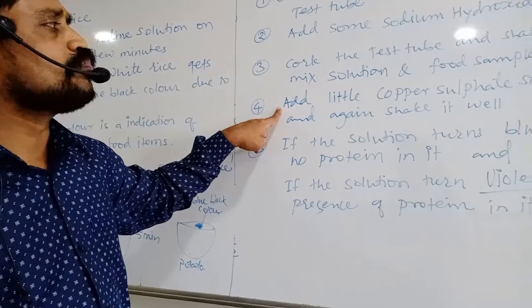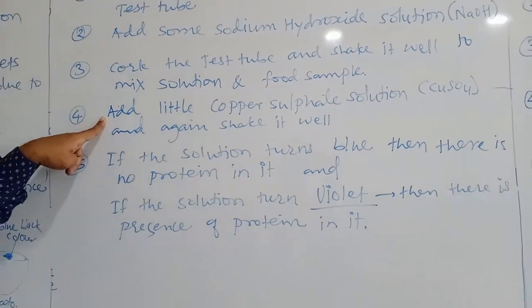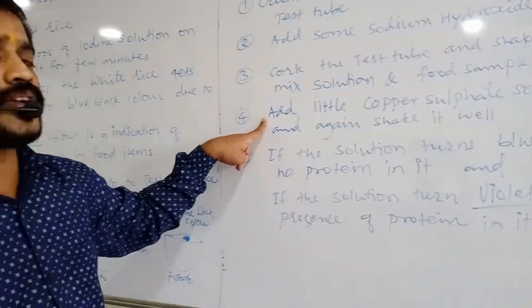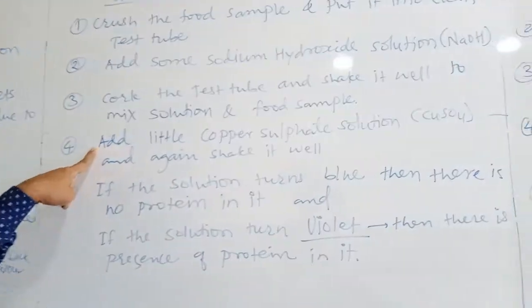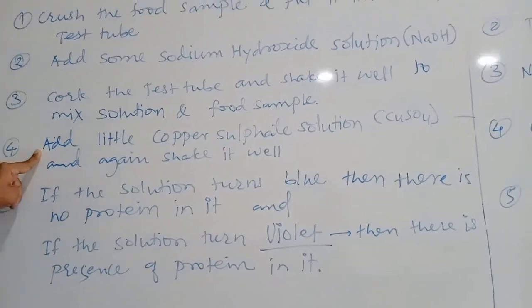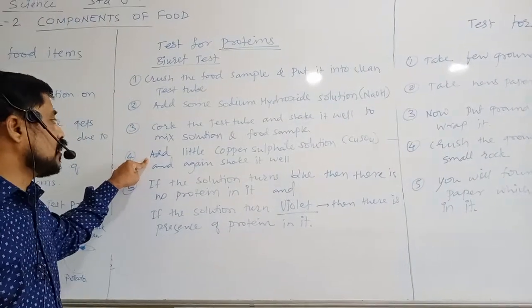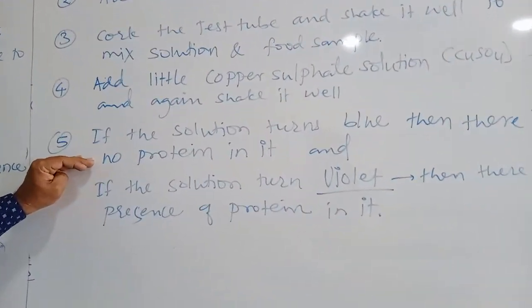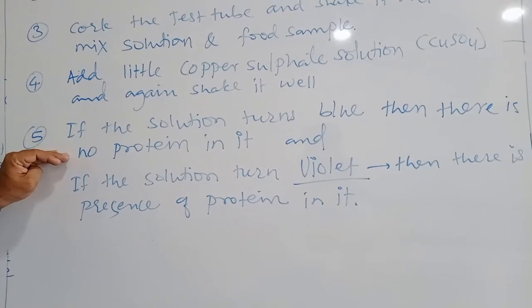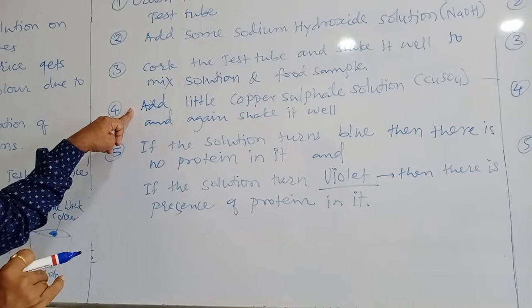Then add little copper sulfate solution that is CuSO4. You will be learning different kinds of solution in your higher classes. So this is the beginning to learn your chemical formulas like NaOH, CuSO4. Then shake it well. After that you have to wait for few minutes after adding this copper sulfate solution in it.